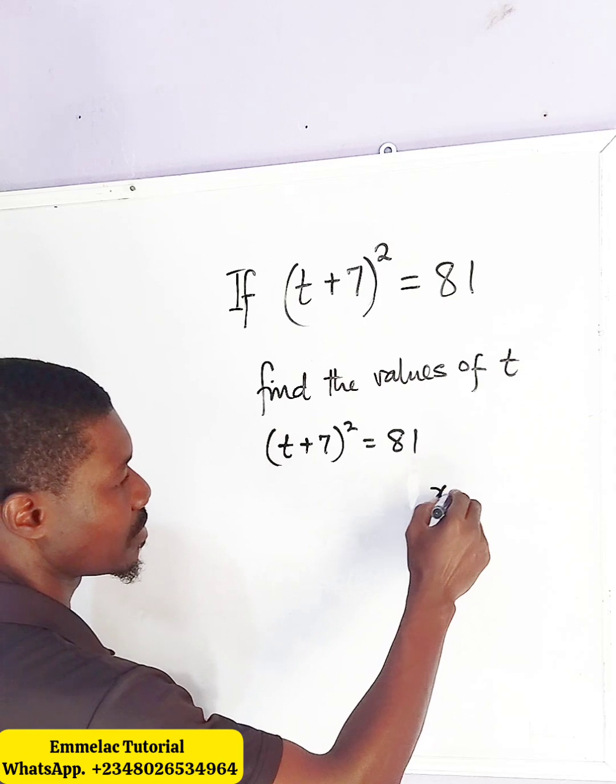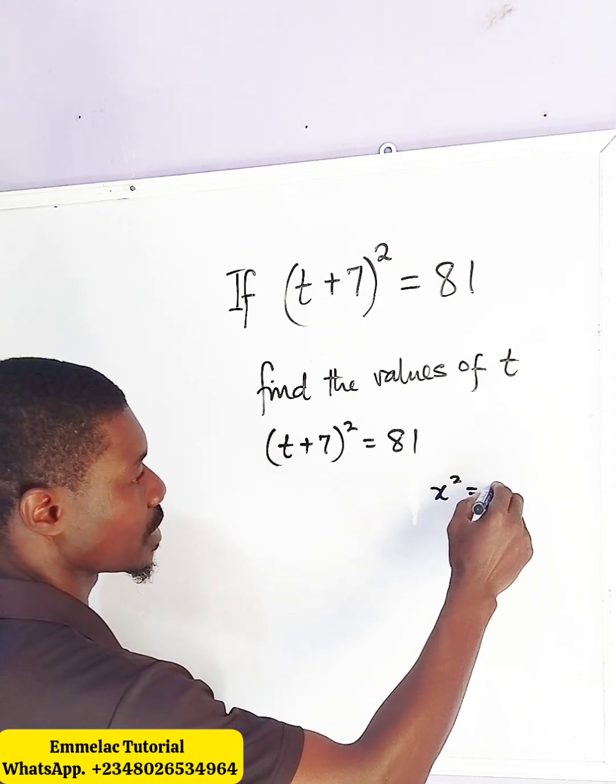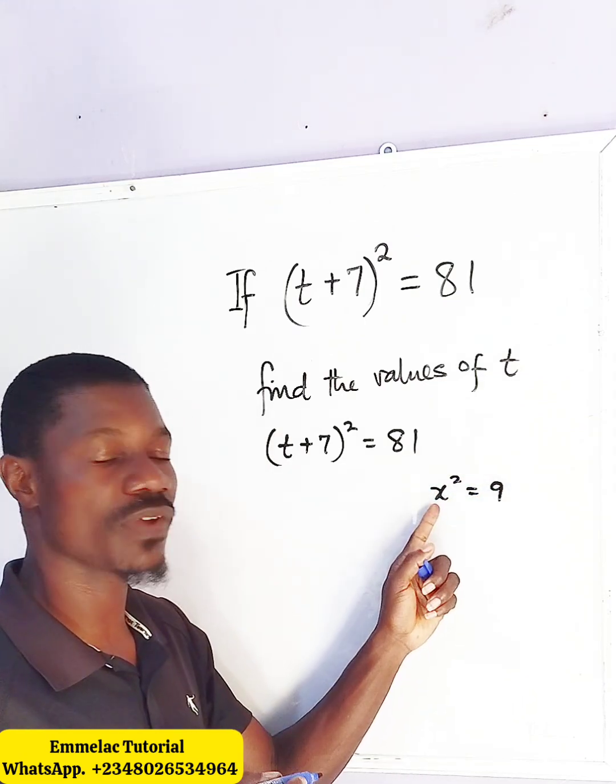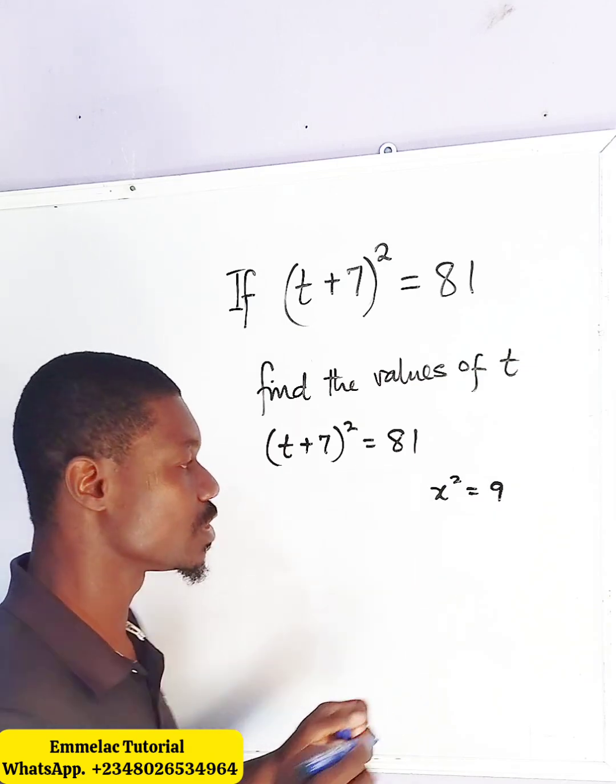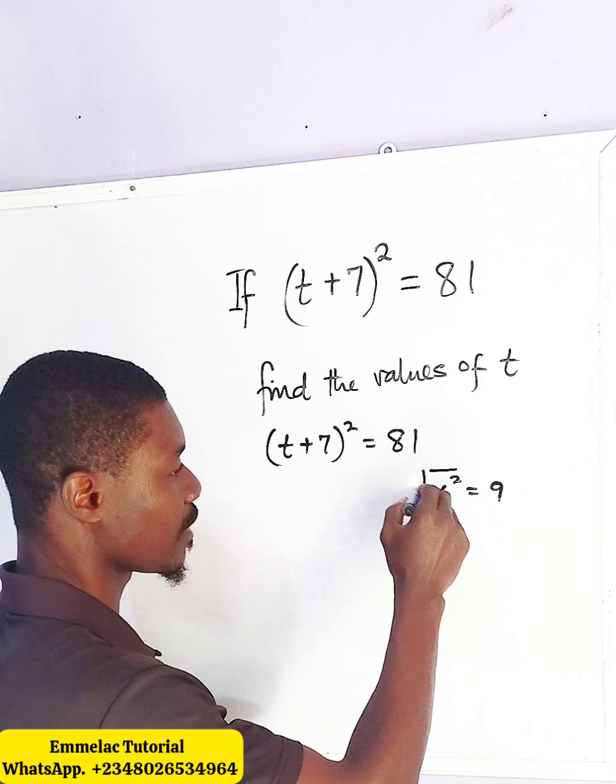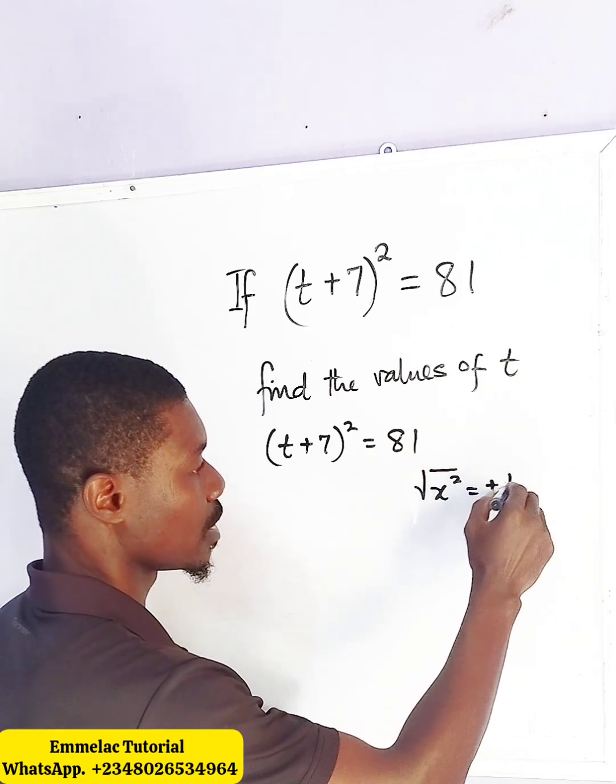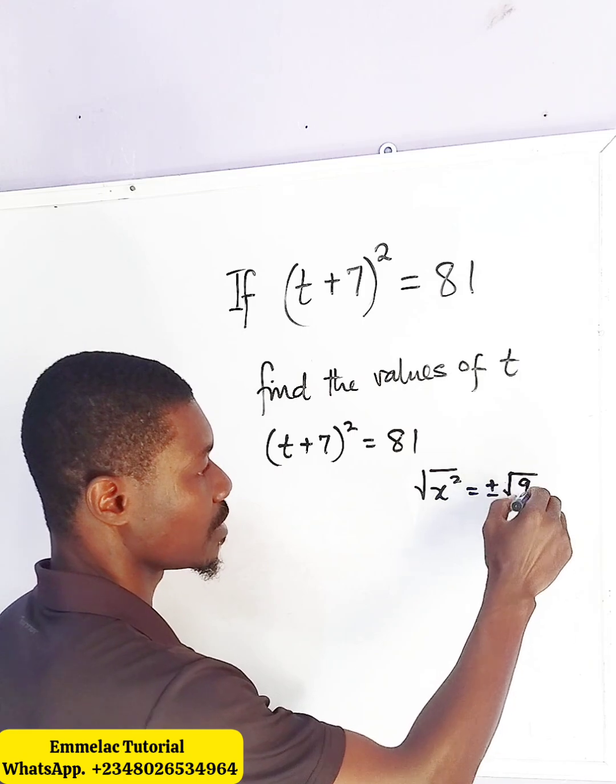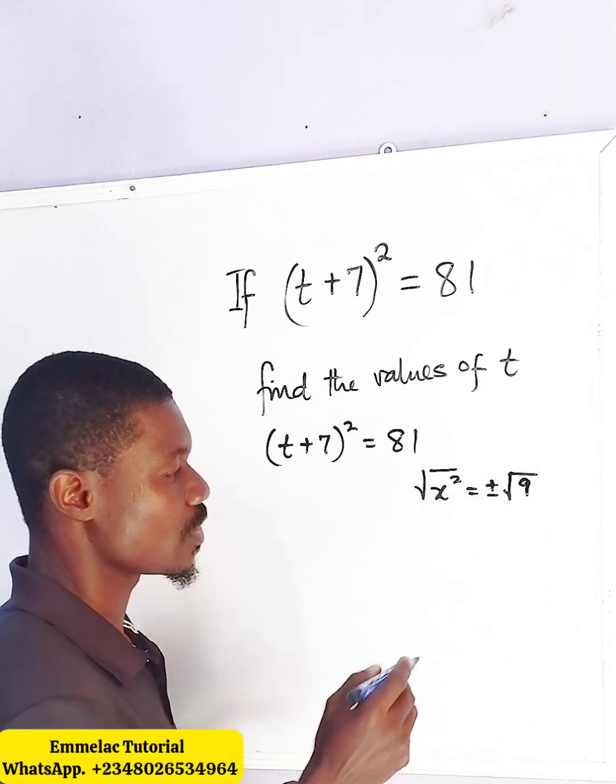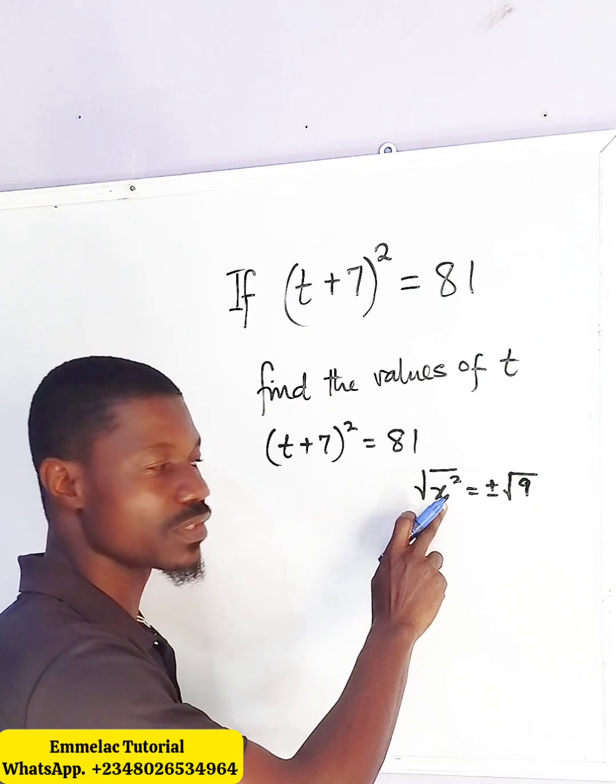if you have x raised to the power of 2 equals 9, to find the value of x, what we need to do is take the square root of both sides, and as we take the square root of both sides, we have a plus or a negative sign here. That is to tell you that because x is raised to the power of 2,